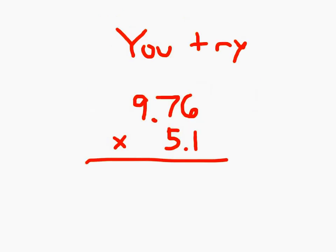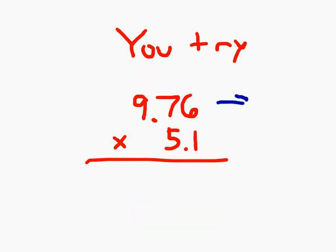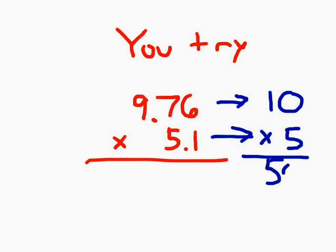The estimated product for 9 and 76 hundredths times 5 and 1 tenths. You try again. Press pause while you are working. Okay. 9 and 76 hundredths rounds to 10. 5 and 1 tenths rounds to 5. And you do multiply those two together to get your estimated product of 50.